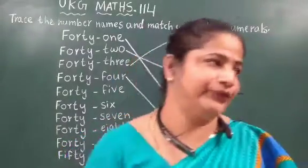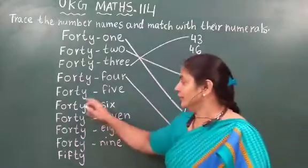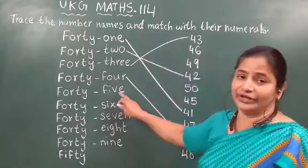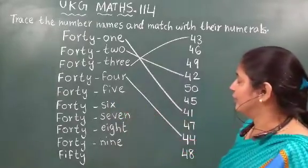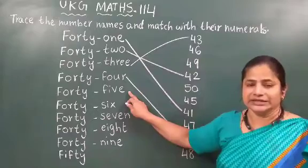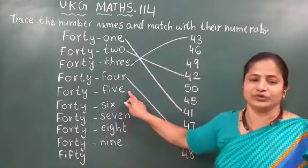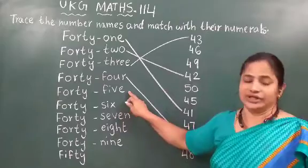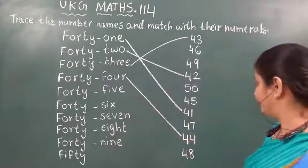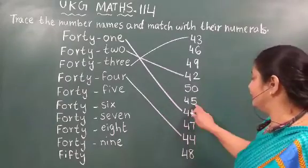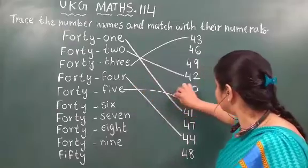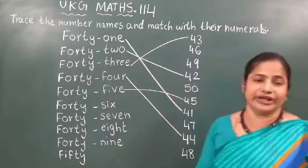After 44, which number will come? 45. And the spelling? F-O-R-T-Y F-I-V-E, 45. Now we already learned the spelling of 45. We can find out the numerals of 45 — it is already here. Now you can match the number names with the numerals of 45.